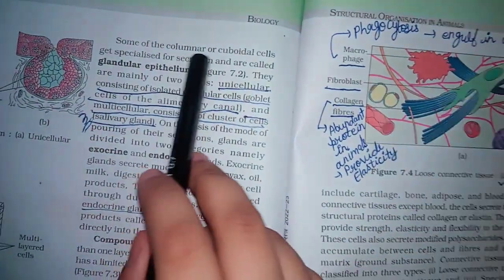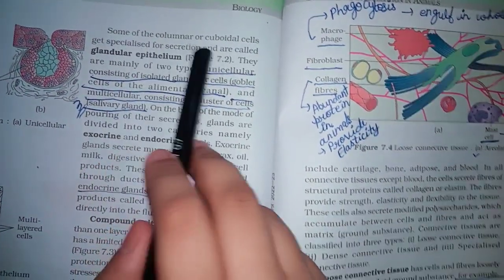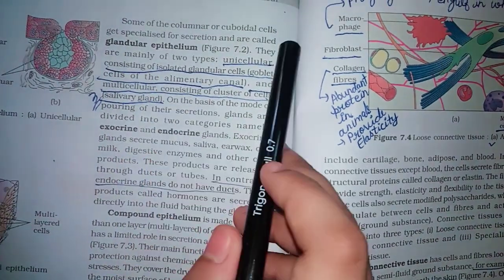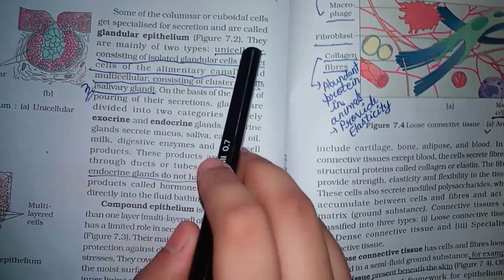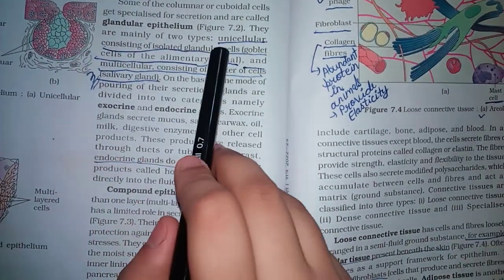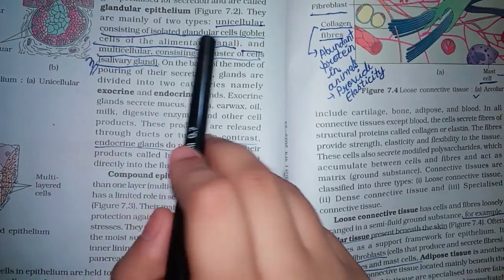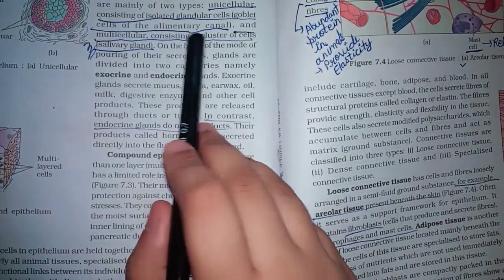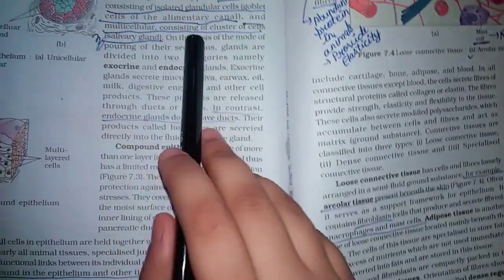Some of the columnar or cuboidal cells get specialized for secretion and are called glandular epithelium. They are mainly of two types: unicellular consisting of isolated glandular cells, goblet cells of the alimentary canal and multicellular consisting of clusters of cells like salivary gland.